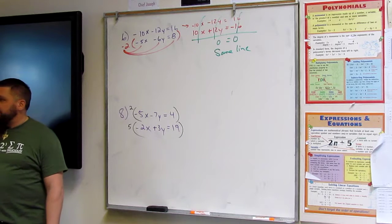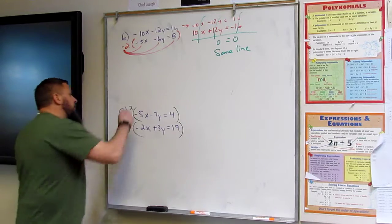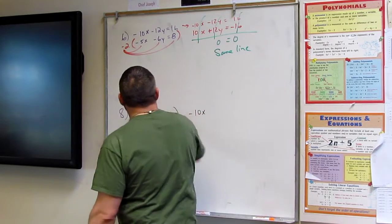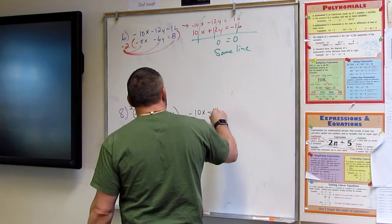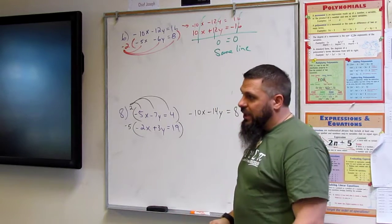All right. So now, two times negative five is negative ten. Two times negative seven is negative fourteen. Two times four is eight. Okay?